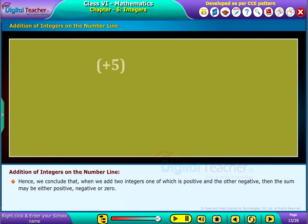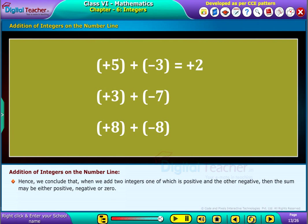Hence, we conclude that when we add two integers, one of which is positive and the other negative, then the sum may be either positive, negative, or 0.